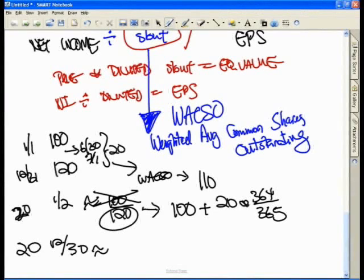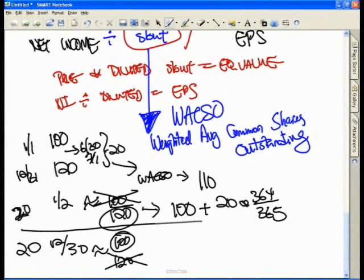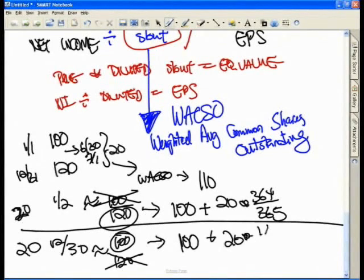If I issued all 20 shares on December 30th, is my weighted average shares outstanding closer to 100 or 120? It is going to be closer to 100 and not 120. Why? Because that extra 20 shares was outstanding for only one day of the year. So that would be calculated as 100 plus 20 times 1 over 365.